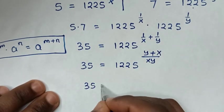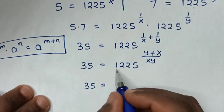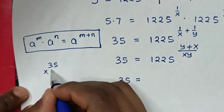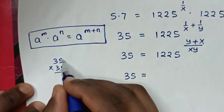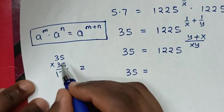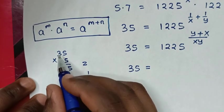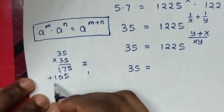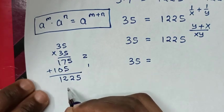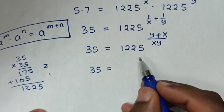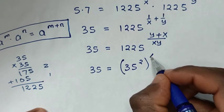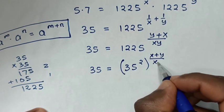Then it will be 35 is equal to 1225 power of x plus y over xy. From 1225, it is the same as 35 times 35, which is 35 squared. So we have 35 is equal to 35 squared, bracket power of x plus y over xy.